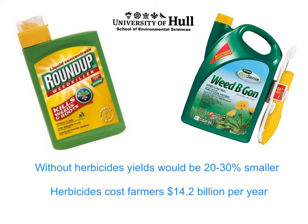In the lab class, we're going to be investigating how different herbicides work. Herbicides are really important in modern agriculture — they're essential for protecting yields. If we didn't use herbicides, yields would be about 20% or 30% smaller on a global scale.